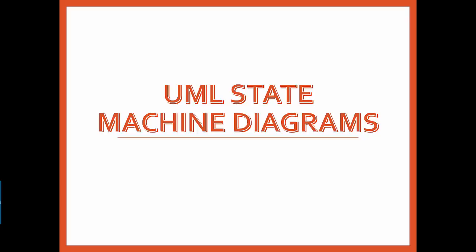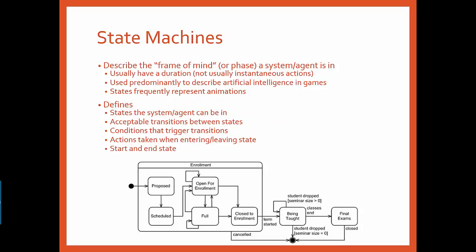Welcome to our discussion of UML state diagrams. State machines are used to describe the sequential phases of a system or agent. They are most frequently used in artificial intelligence for games to describe the thought process of an agent. Each stage represents an agent's current frame of mind and how it will respond to events in the system.